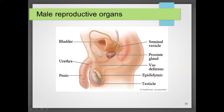Heart, lungs, liver, and even the brain — they are vital organs and they are located and protected in skeleton cages. But the testes is the most important organ.